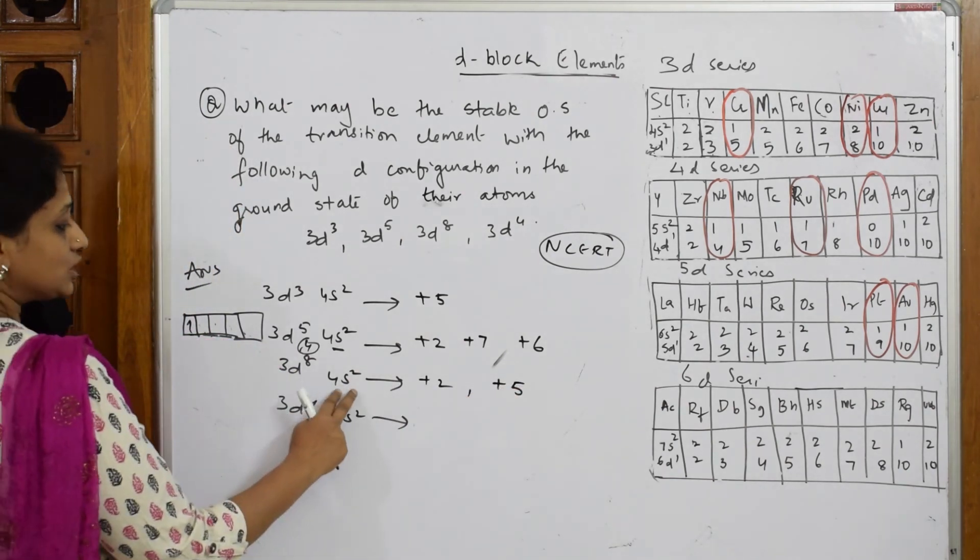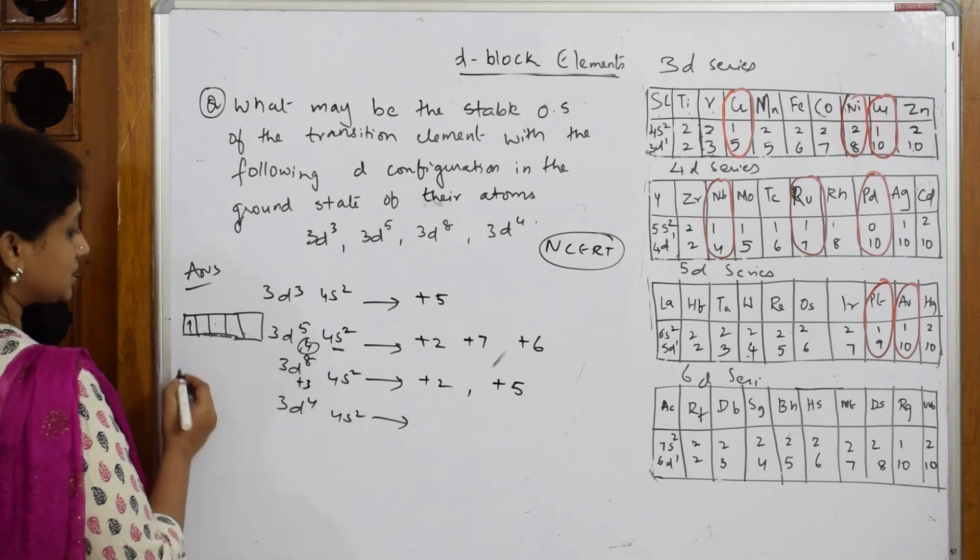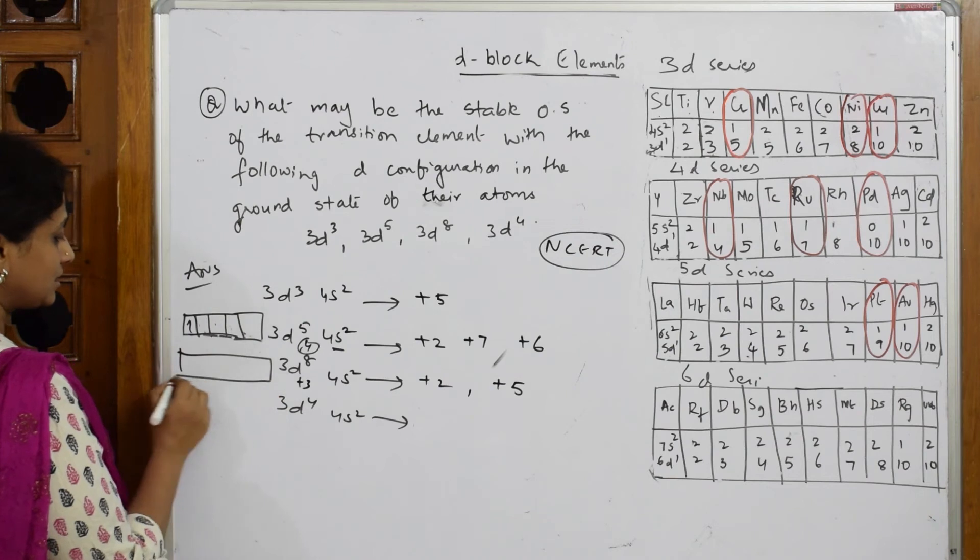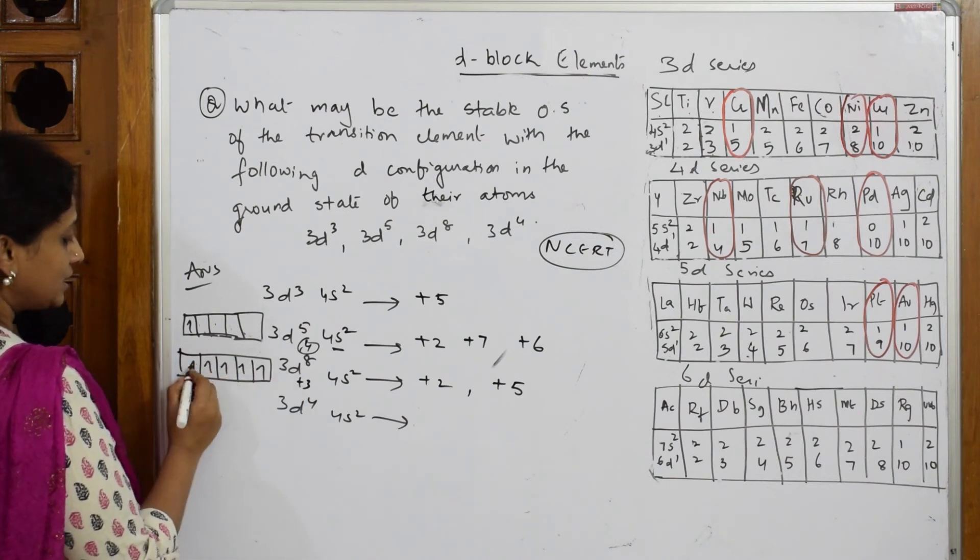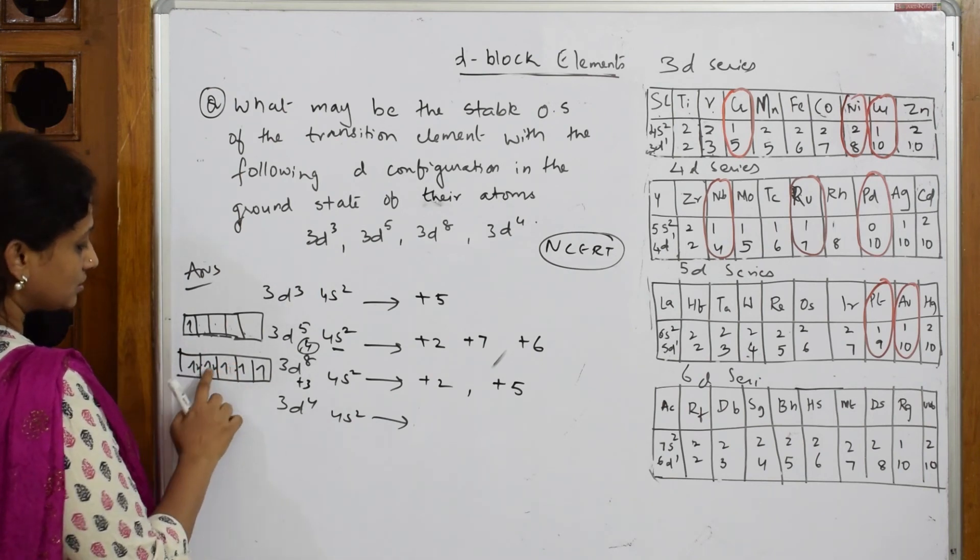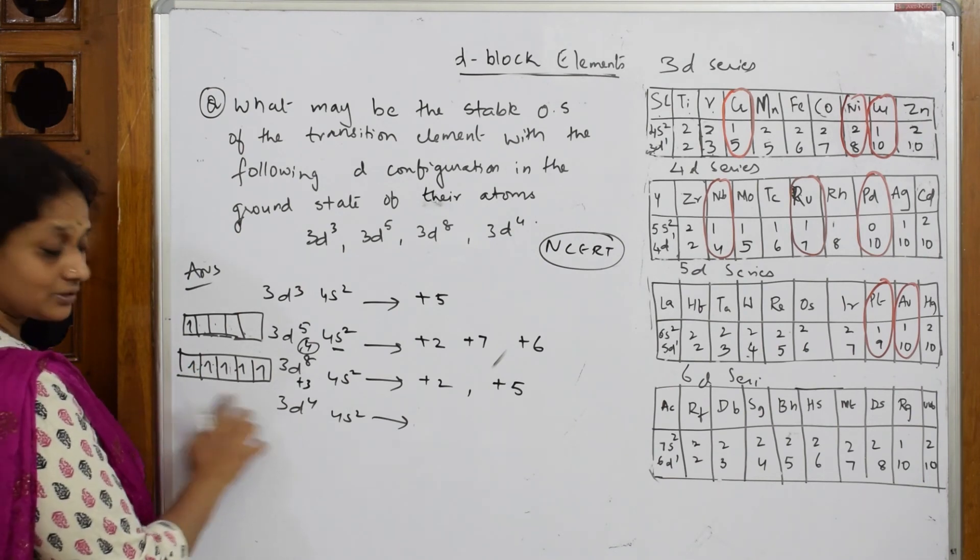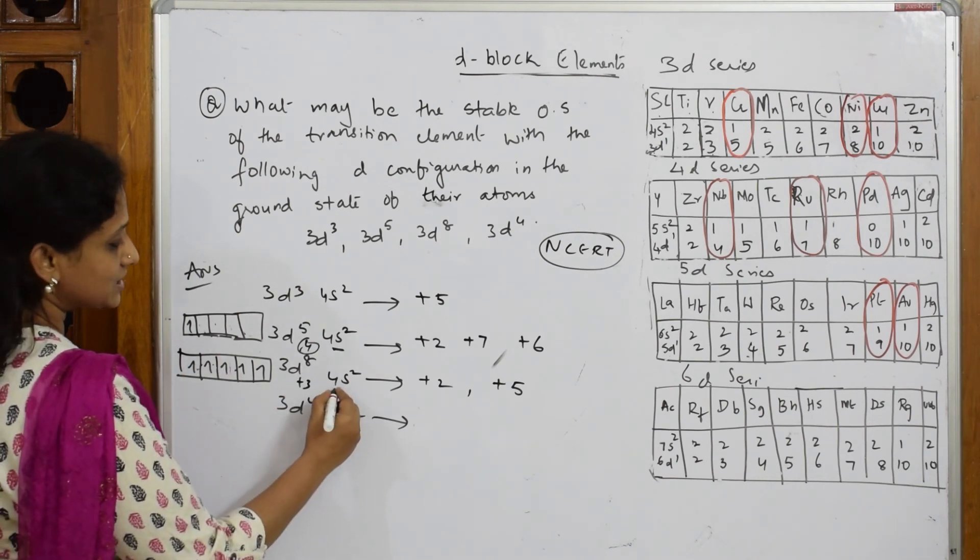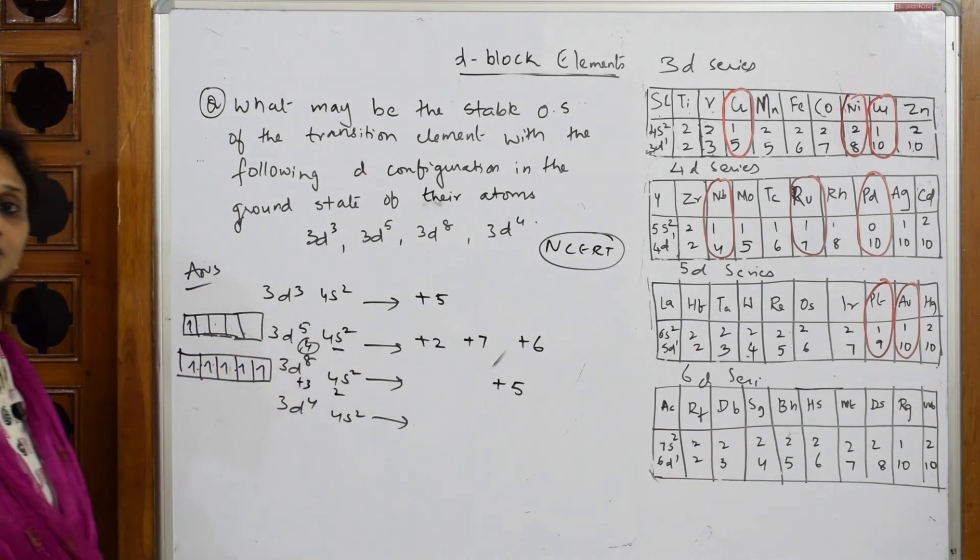If I have to write +5: 2 from here and 3 from here. Now let us write 3d⁵ - 1, 2, 3, 4, 5, 6, 7, 8. I'm going to remove 3: 1, 2, 3. It has become stable, 3d⁵. So the possibility for this is +5 stable configuration.